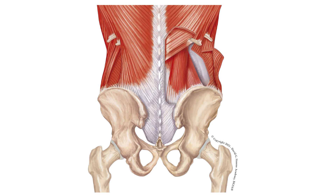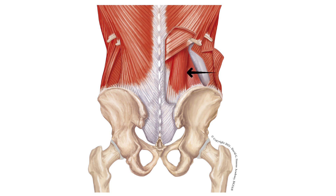The lateral part of the QL can be palpated through the abdominal obliques and the transversus abdominis muscle. The origin of the QL at the iliac crest can be different — in some patients it is slightly more lateral and in some patients it is more medial. That means that the distances between the lateral border of the iliocostalis and the lateral border of the QL vary.